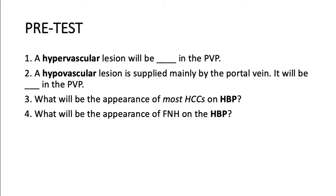At the end of this talk, hopefully we will be able to answer the following. 1. A hypervascular lesion will be blank in the portal venous phase. 2. A hypovascular lesion is supplied mainly by the portal vein, therefore it will be blank in the portal venous phase. 3. What will be the appearance of most HTCs on the hepatobiliary phase. 4. What will be the appearance of FNH on the hepatobiliary phase.